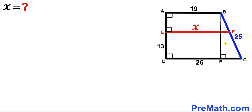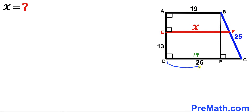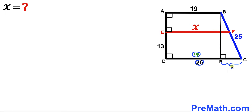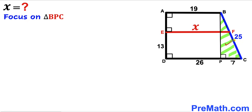In the next step, I have dropped perpendicular BP onto base CD. We can see that segment DP is going to equal base AB. Since the base is 19, segment DP is also 19. Furthermore, the whole base CD is 26, so the remaining segment PC is going to be 26 minus 19, which gives us 7 units. Now let's focus on right triangle BPC and apply the Pythagorean theorem to calculate side BP.